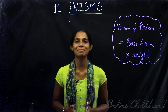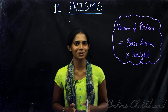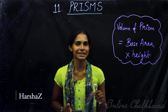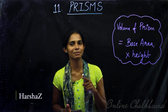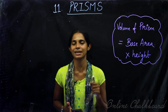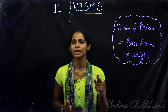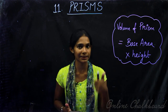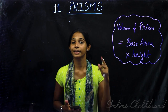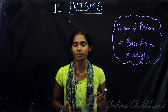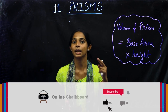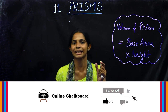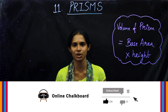Hi friends! Welcome back to Online Chalkboard. Now we are going to do chapter number 11. Prisms are going to be done. In the class, we have different types of prisms — that is how we calculate the volume of prisms.